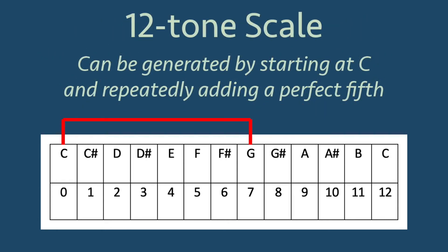If we start at C and repeatedly add the interval of a perfect fifth, we can generate the entire 12-tone scale using modular arithmetic.